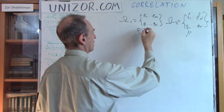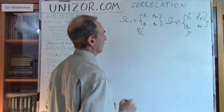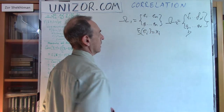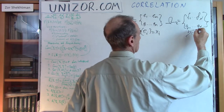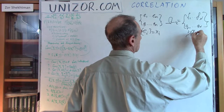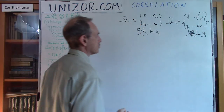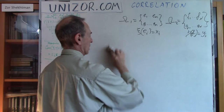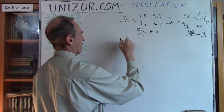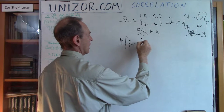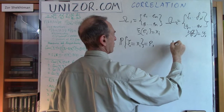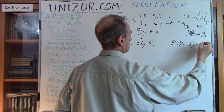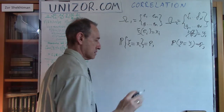Random variable XI on elementary events E1, etc., EM takes corresponding values XI_i. And random variable ETA of FJ has value of YJ. So the probability of XI to take value XI_i equals PI, and the probability of ETA to take YJ is equal to QJ.